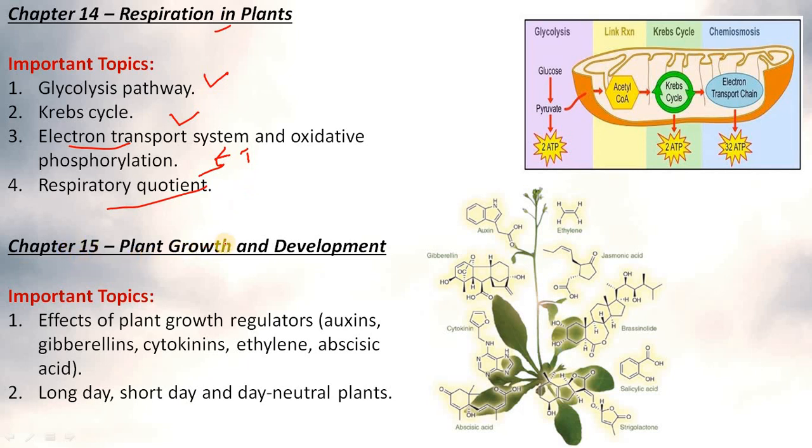Chapter 15 Plant Growth and Development important topics are effects of plant growth regulators: auxins, gibberellins, cytokinins, ethylene, abscisic acid, long day, short day and day-neutral plants.